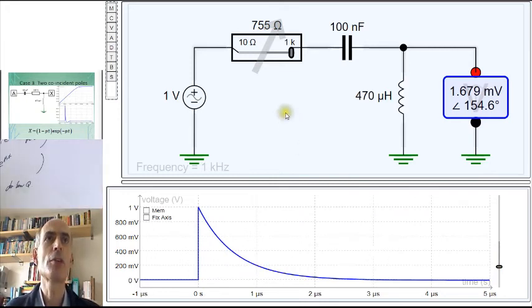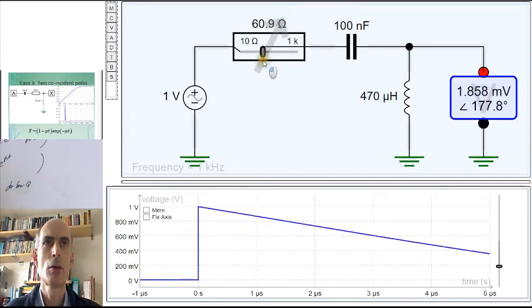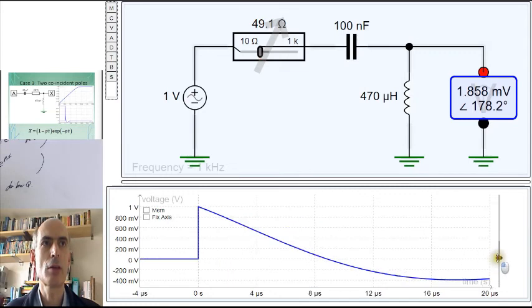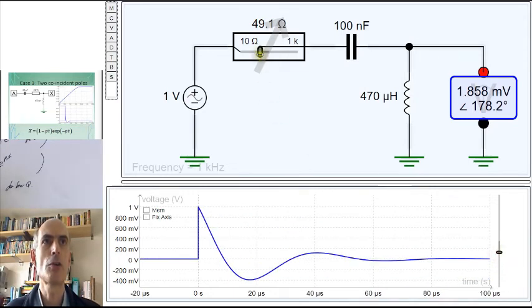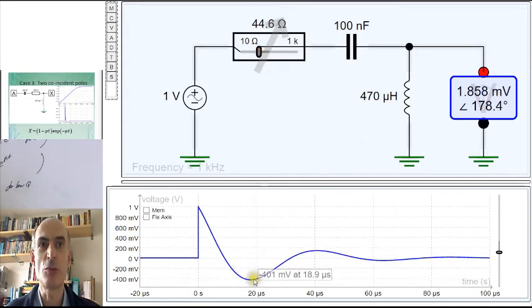Once we start increasing the Q factor, however, by changing the resistor, we can see that the response is changing shape, and we start to get this overshoot, or undershoot really, and ripple appearing in the output.